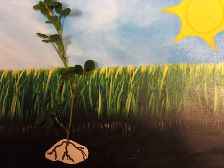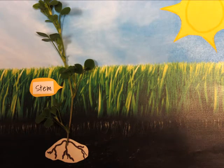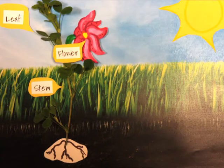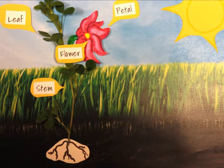It is now made up of a stem, leaves, a flower, petals, and a seed pod.